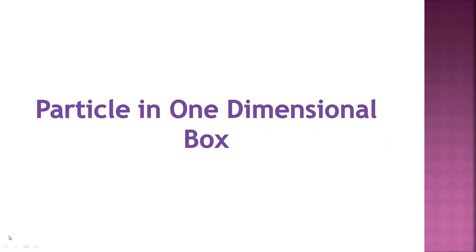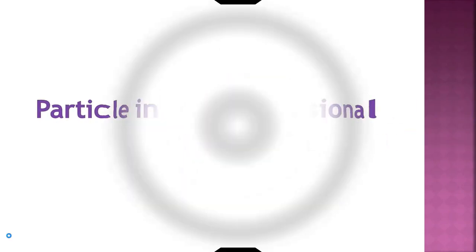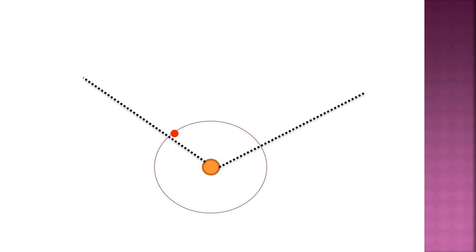Particle in one-dimensional box. Hello learners. We learned that the microscopic particle like electron in an atom moving around the nucleus as a wave called matter wave. What happens when such microscopic particles like electron is allowed to move in a limited space? In this lecture, we are going to observe the behavior of such microscopic particle like electron when trapped in a limited space called one-dimensional box.